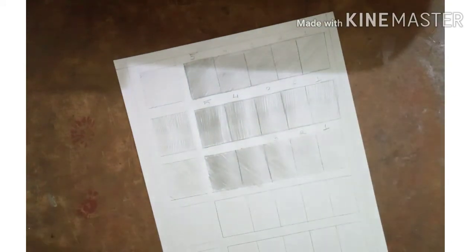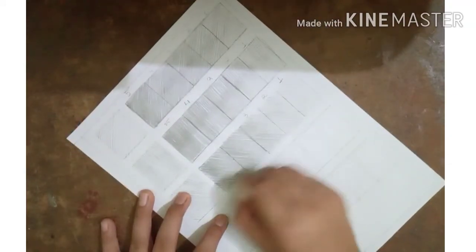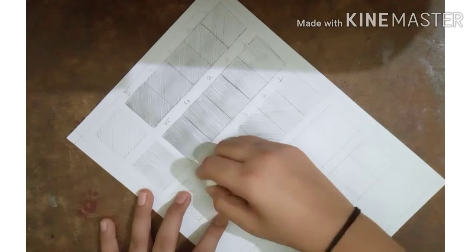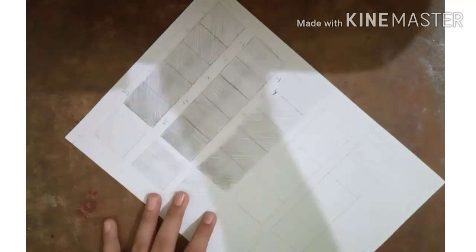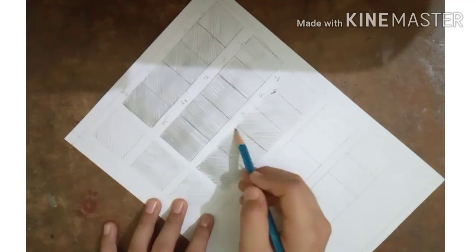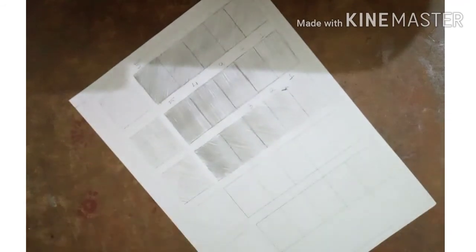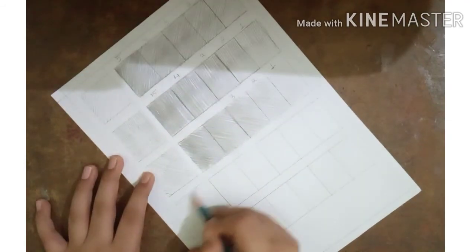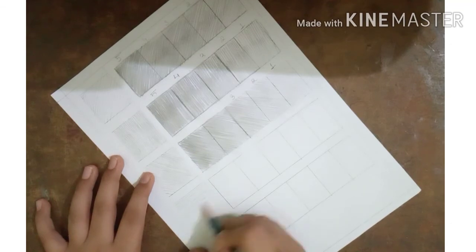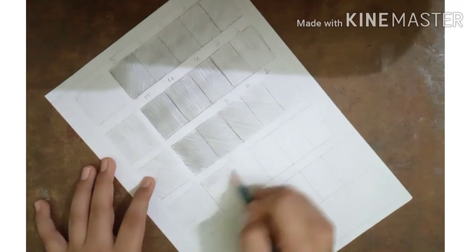So I have completed shading in this box also. Now we will do horizontal shading. Repeat the same procedure as we have done in the previous boxes.